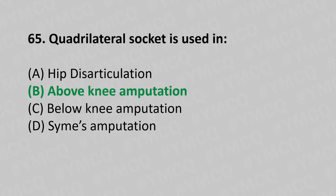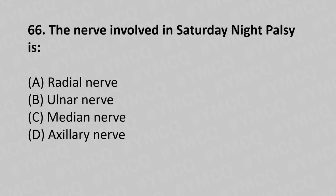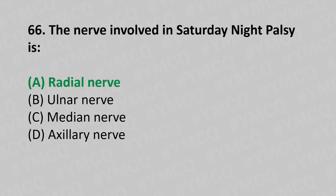Moving to our 66th question. Nerve involved in Saturday night palsy is: Option A, Radial nerve; Option B, Ulnar nerve; Option C, Median nerve; Option D, Axillary nerve. And the answer is Option A, Radial nerve.